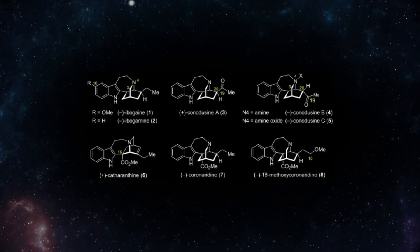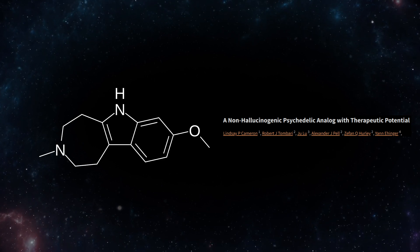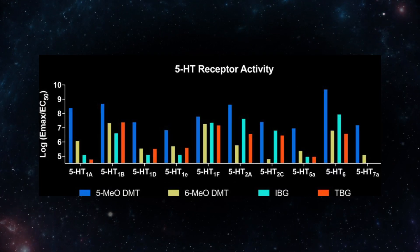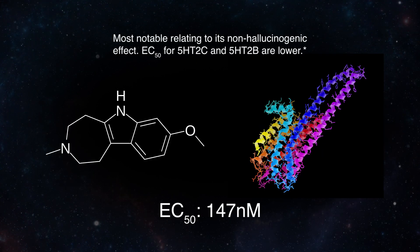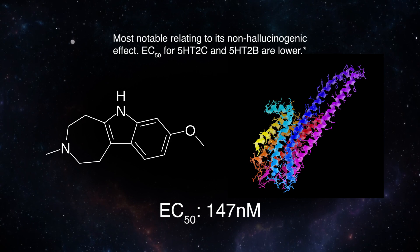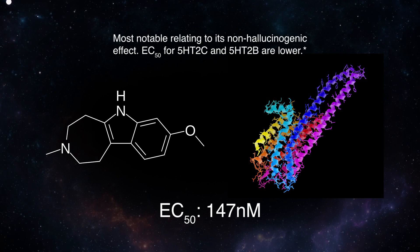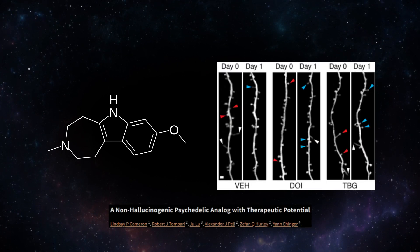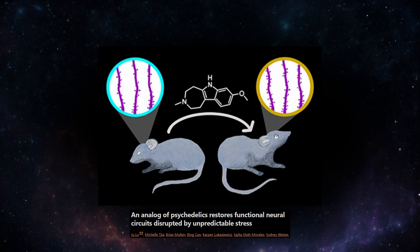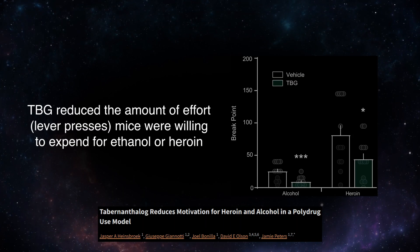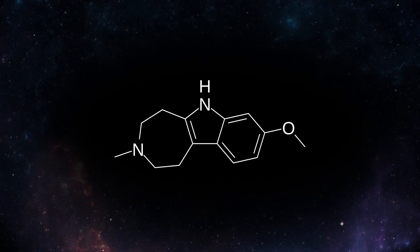Compared to its structural analogs found in Tabernanthe iboga, Tabernantalog loses much of its affinity to opioid, nicotinic, and sigma receptors and gains specificity for various serotonin receptor subtypes. Its most notable action is at Serotonin-2A where, despite being an agonist, it does not produce responses that would indicate psychedelic hallucinations in animals. In rodents, it was found to promote neuronal plasticity, represented by increased dendritic arborization. It also produced anti-depressive and anti-addictive effects in these animals and has thus been characterized as a non-hallucinogenic psychoplastogen.